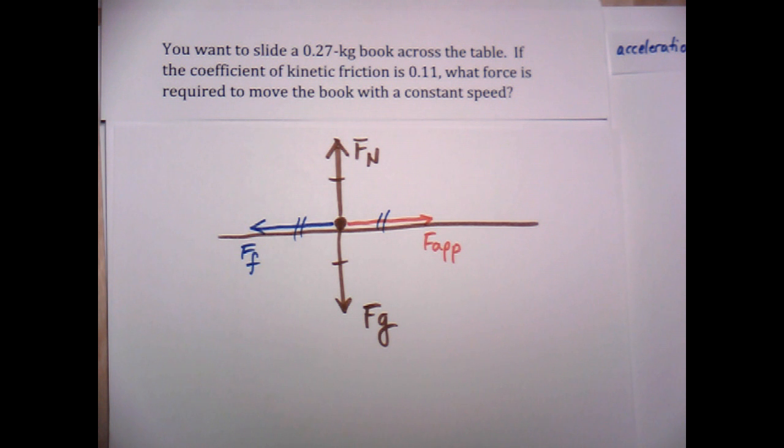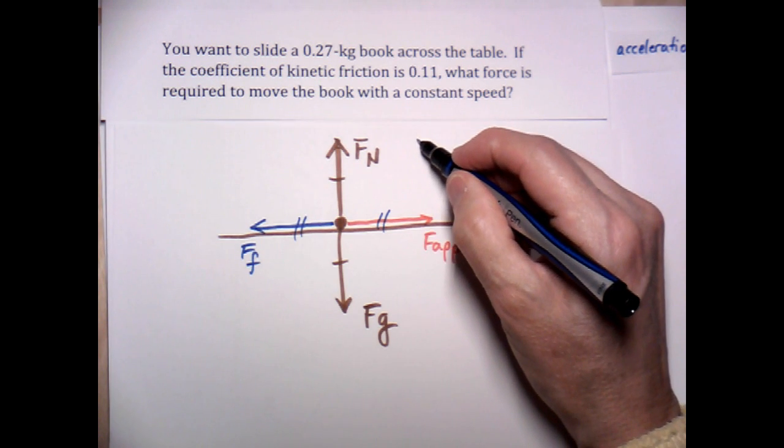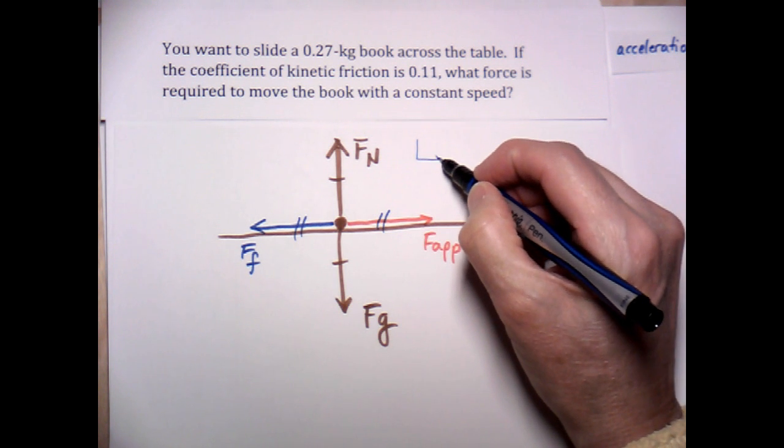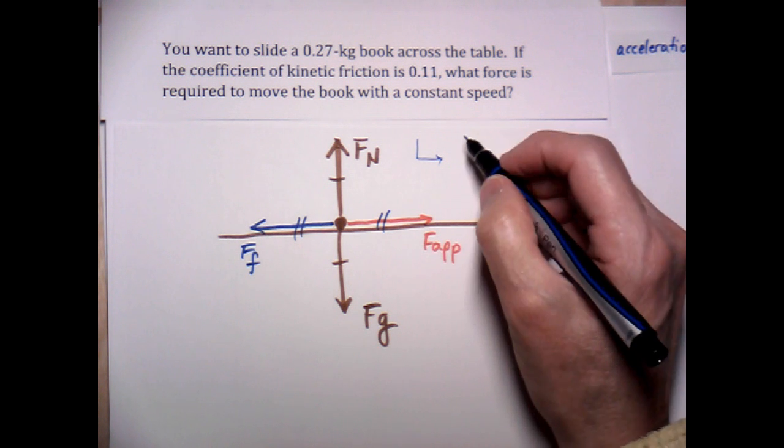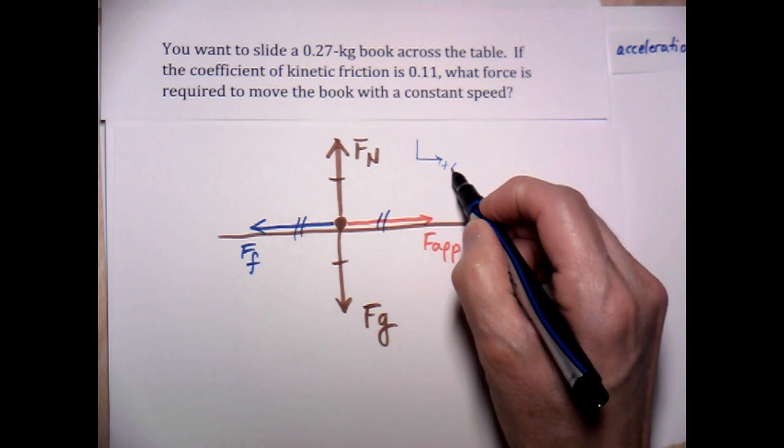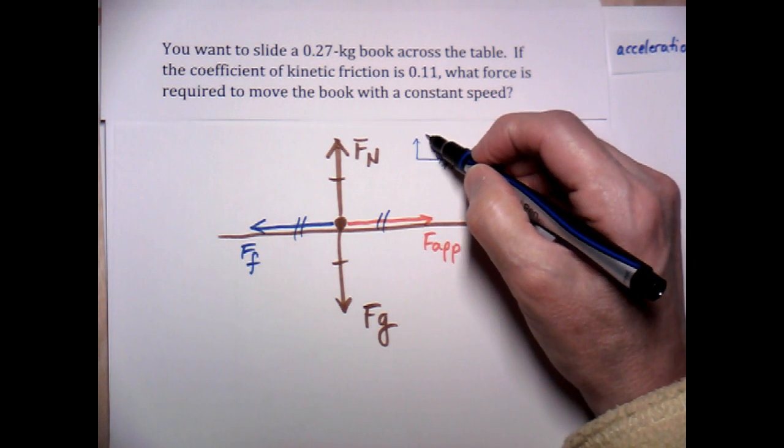All right. Well, since we need to assign a coordinate system to this, let's go ahead and say that there's no acceleration, but the direction of motion is to the right. So I'm going to label to the right being positive X and up being positive Y.